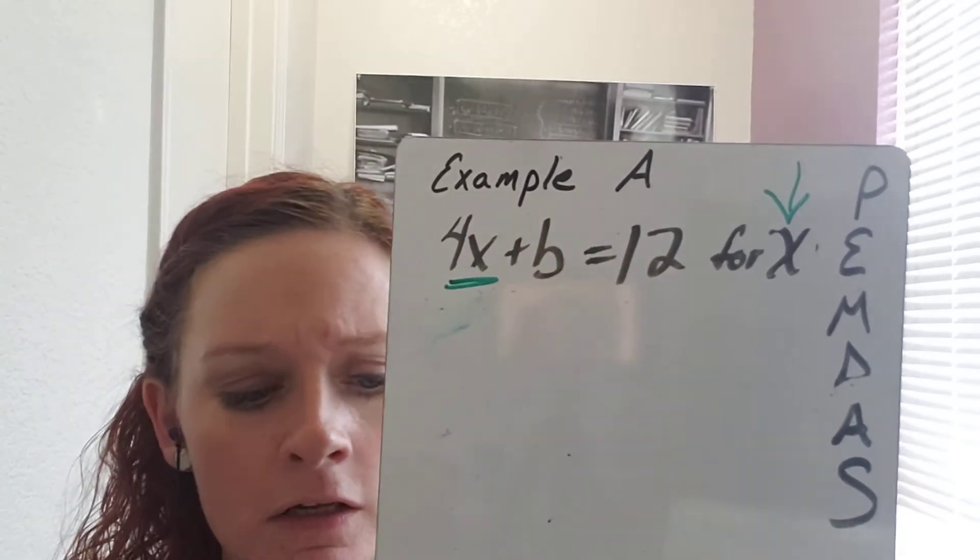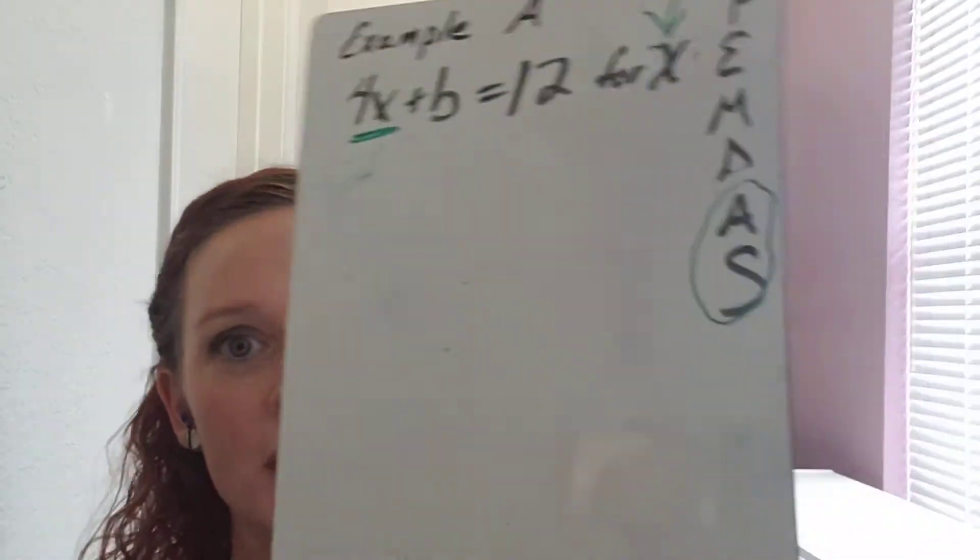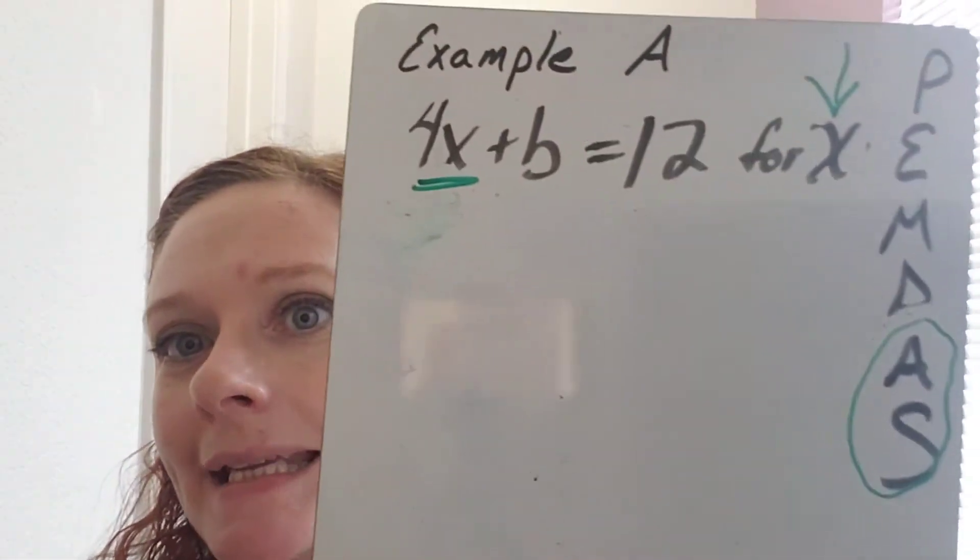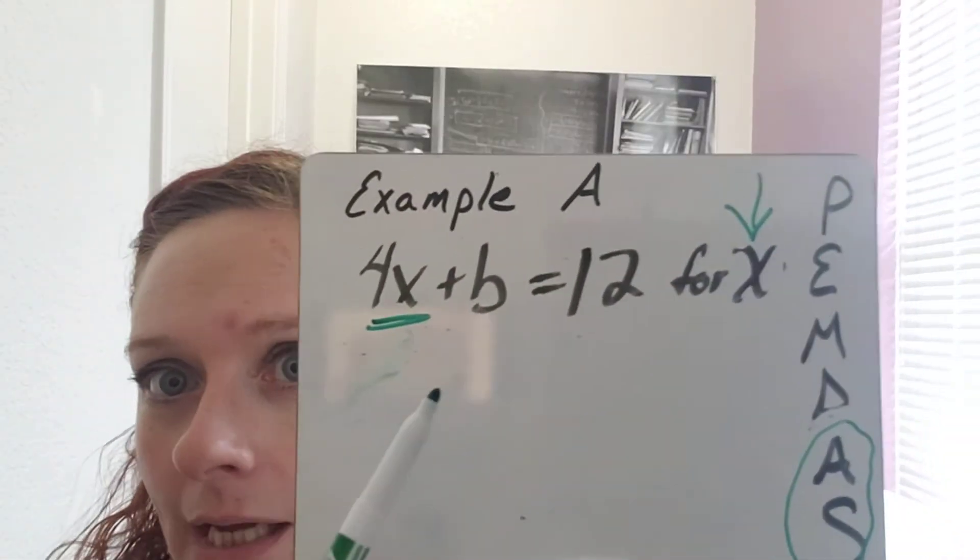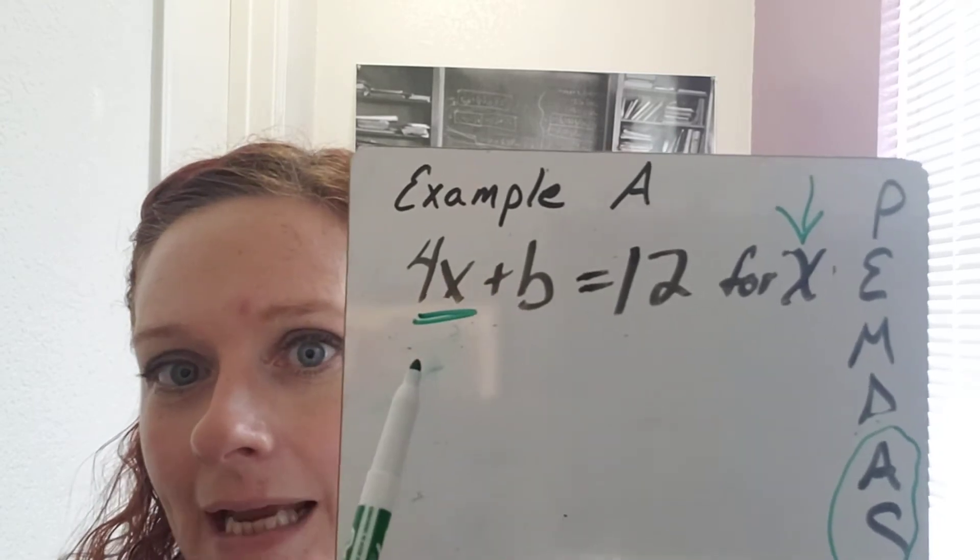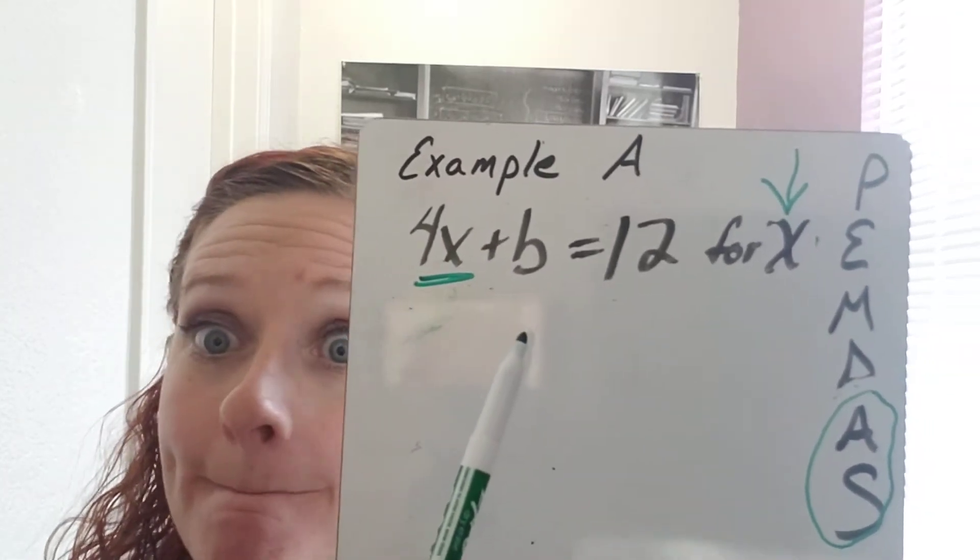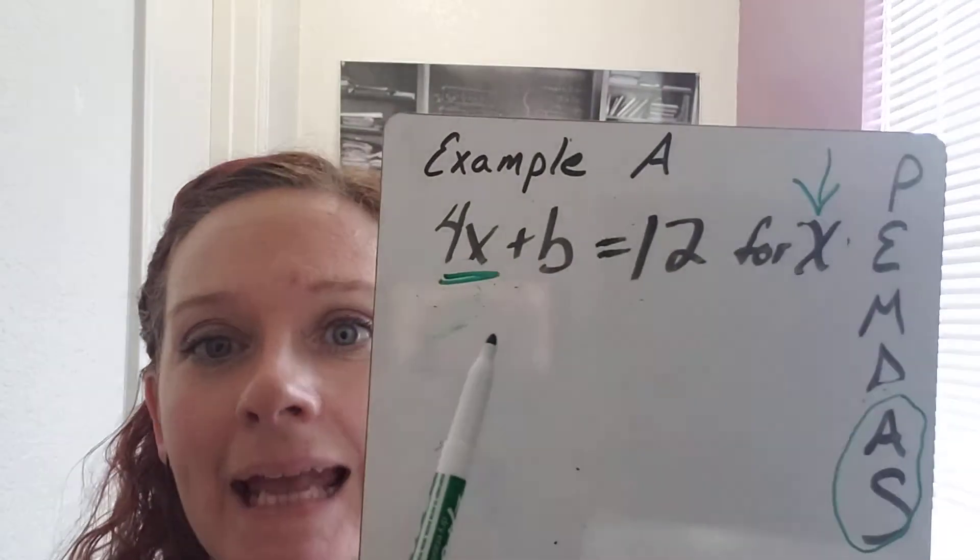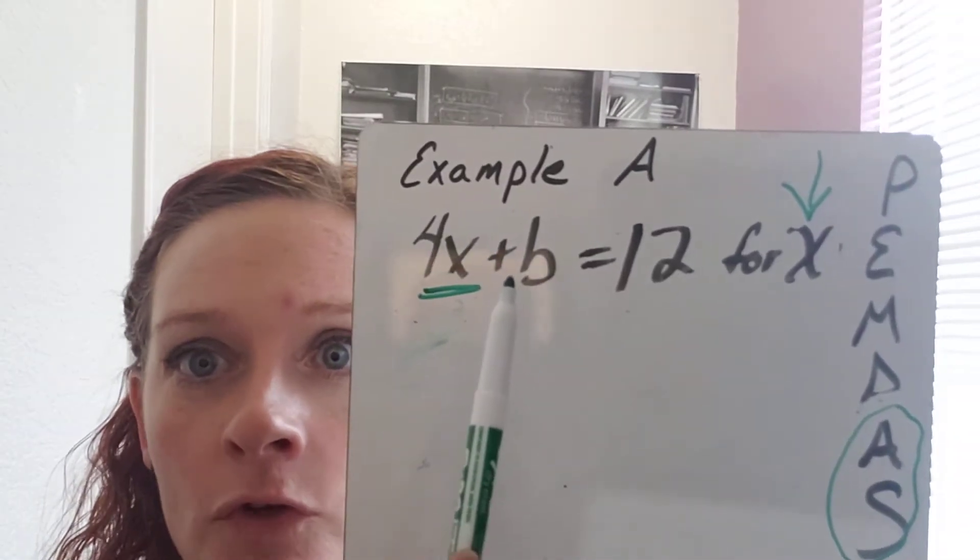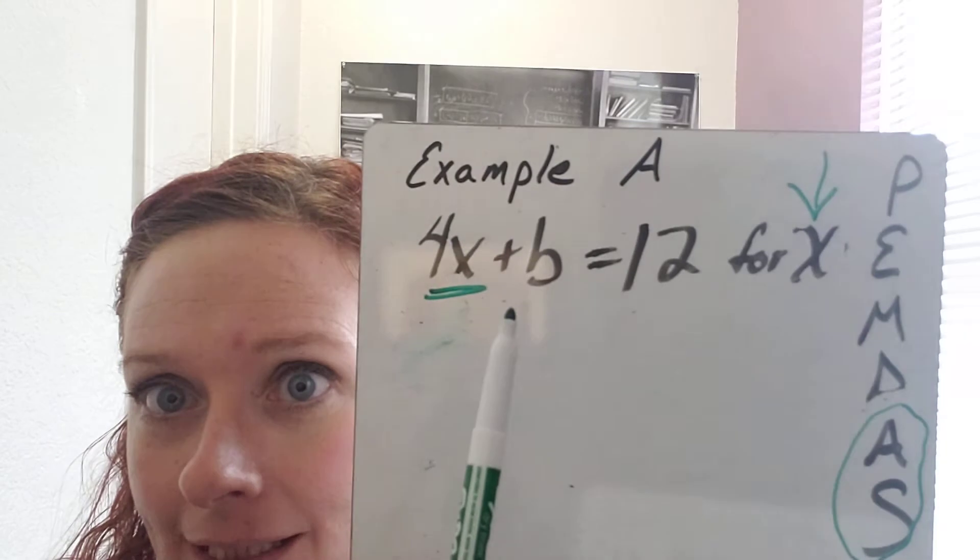Step three, use backwards PEMDAS to isolate the variable. For using backwards PEMDAS, we're going to start with addition and subtraction. Since we're isolating the X, we're going to come to the side with X and we're going to say, is there any addition or subtraction? Yes, there's addition. You know there's addition because there's this plus sign right here.